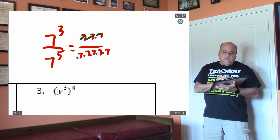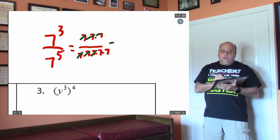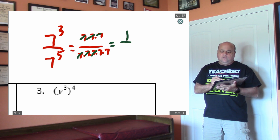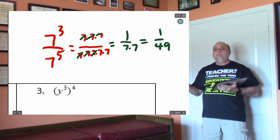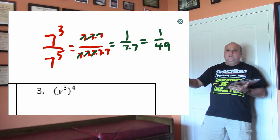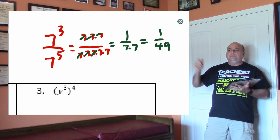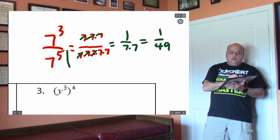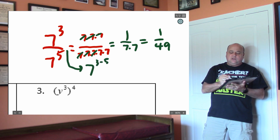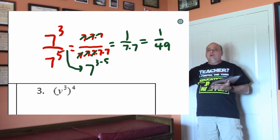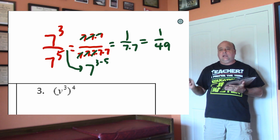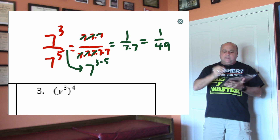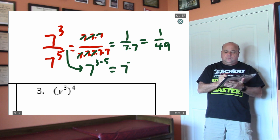You could cancel out three sets of 7s and you would have 1 over 7 times 7, which is 1 over 49. You learned last week that you can subtract the numerator and denominator exponents. When you divide bases with exponents, you subtract the exponents. So 3 minus 5 is negative 2.